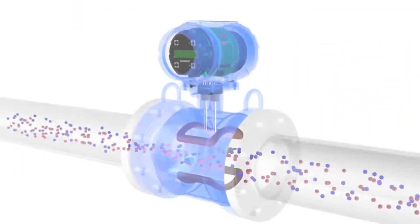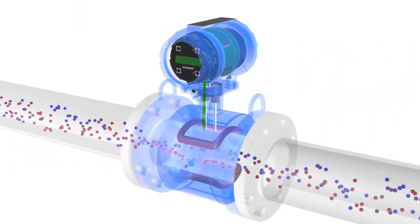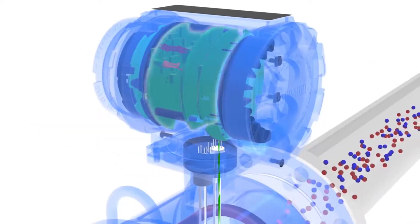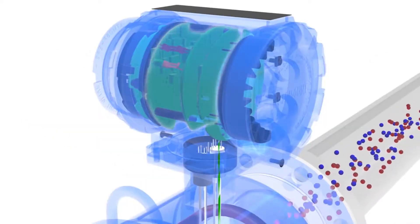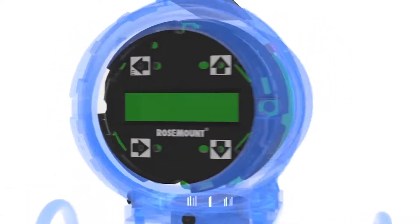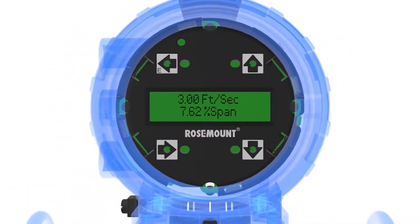The induced voltage is carried to the transmitter through the electrode circuit. The transmitter then converts this voltage into a quantifiable flow velocity. With the known velocity along with the area of the pipe, the volumetric flow rate of the fluid is calculated.